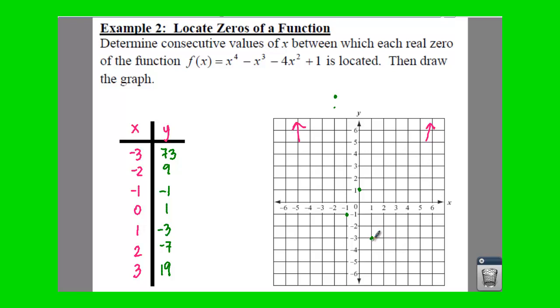Then we go over one, down three. You have over two, down seven. So that's here. And finally, over three, up 19.